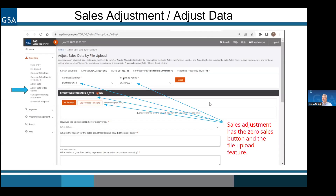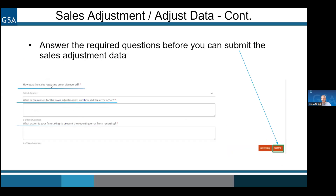After you select the contract number and reporting period and upload your file, you still have to answer three questions before the submit button becomes live: how was the reporting error discovered, what's the reason for the adjustment and how did it occur, and what is your firm doing to avoid that in the future? You have to answer all three and then the submit button becomes live and you can submit your data.